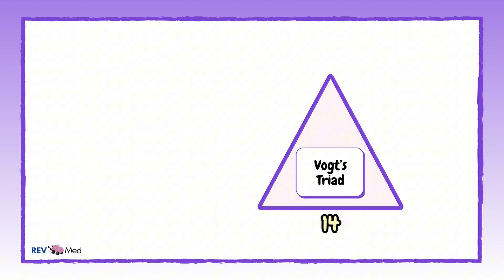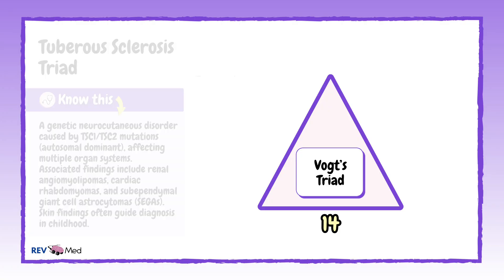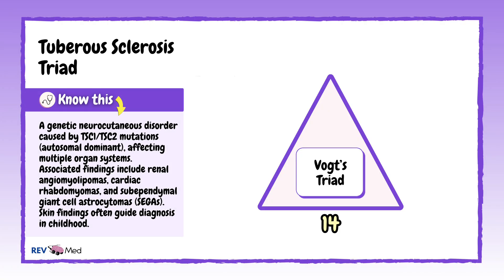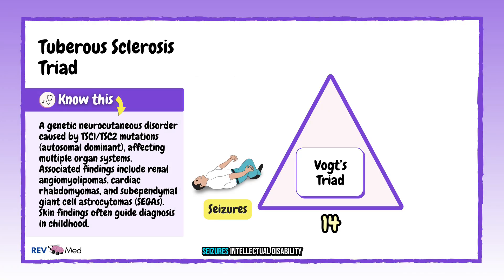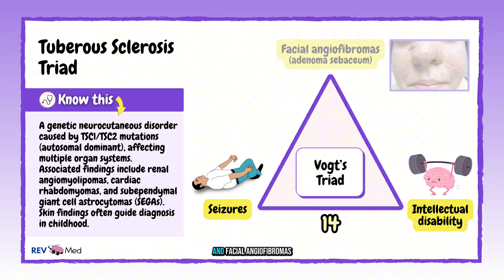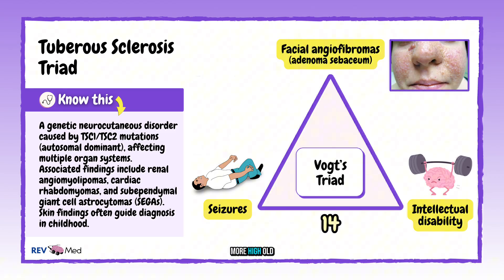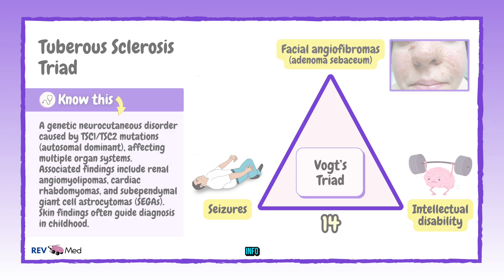Number fourteen: Vogt's triad, also known as the tuberous sclerosis triad — seizures, intellectual disability, and facial angiofibromas. Pause to read this for some more high-yield info.